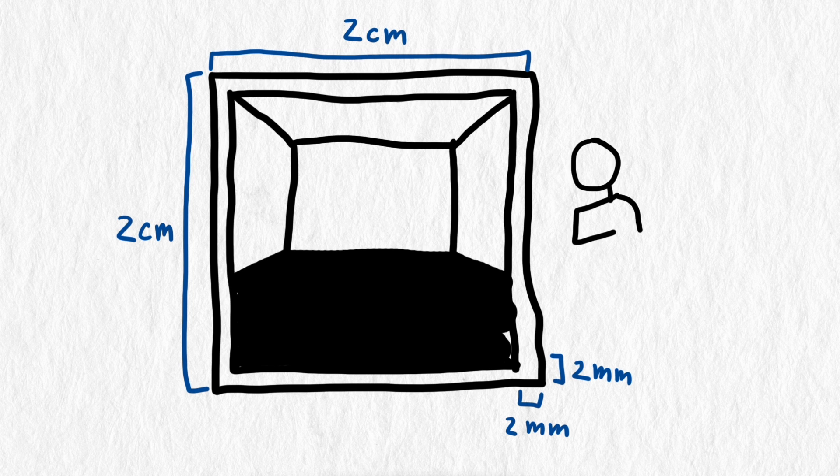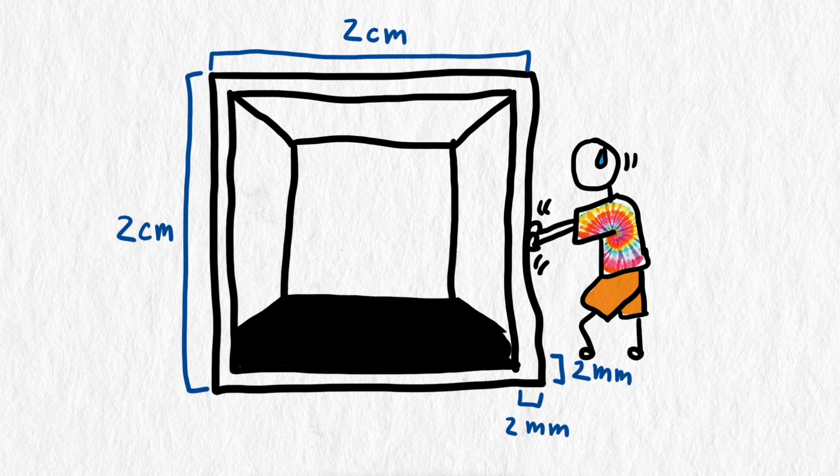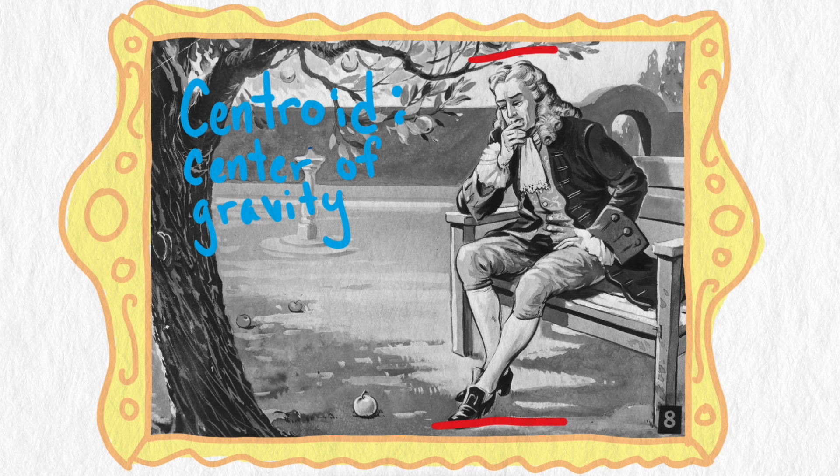We want the lowest center of gravity because that makes it hardest to tip over, or easiest to tip over if it's upside down. That gives us the best chance of getting a single value to come up. But how do we find the center of gravity, which is sometimes called a centroid, of an object like that?